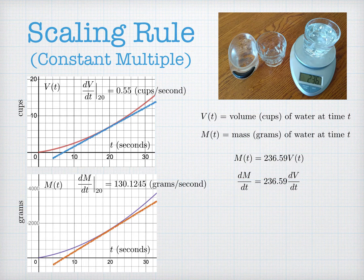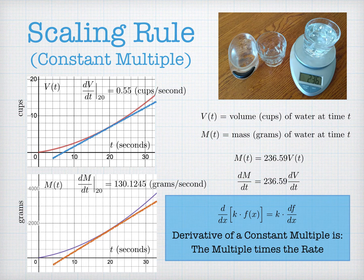This gives us our constant multiple rule: if I'm interested in the rate of change of a constant times a function, that rate is the same constant times the rate of change of the original function.